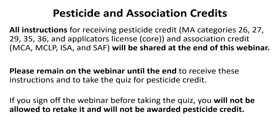Just a little bit of information about pesticide and association credits for those joining us today who are in search of those. All instructions for receiving pesticide credit, which includes Massachusetts categories 26, 27, 29, 35, 36, and applicator's license or core license, as well as association credits, will be shared at the end of today's webinar. Please remain on the webinar until the very end to receive these instructions and take the quiz for pesticide credit. The quiz is only required for those looking for pesticide credit. If you sign off before taking the quiz, unfortunately you will not be allowed to retake it and will not be awarded the pesticide credit.